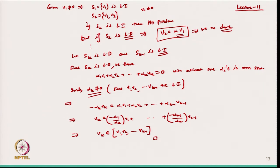The moral of this theorem is: when we have a large number of vectors, we start with the first vector, then take the first 2 vectors, then first 3, and keep checking. Once we reach a linearly dependent set, the whole set is linearly dependent; otherwise it is linearly independent.